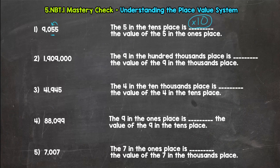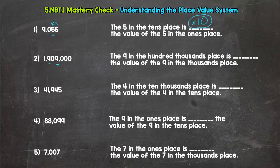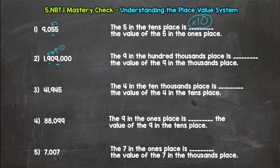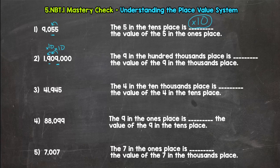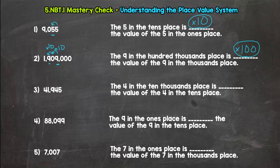Number two: the nine in the hundred thousands place is blank the value of the nine in the thousands place. So we are going from the thousands to the hundred thousands. So two jumps to the left. So times ten times ten. So what do you think? If you said one hundred times, let's read our sentence back and double check. The nine in the hundred thousands place is one hundred times the value of the nine in the thousands place. That is true.